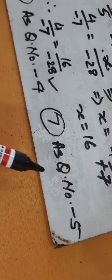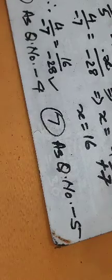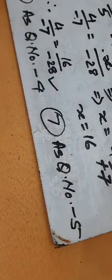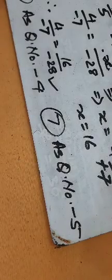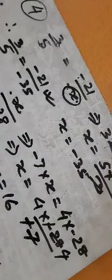Question number eight: find equivalent rational numbers with a common denominator. The denominator is to be made common.